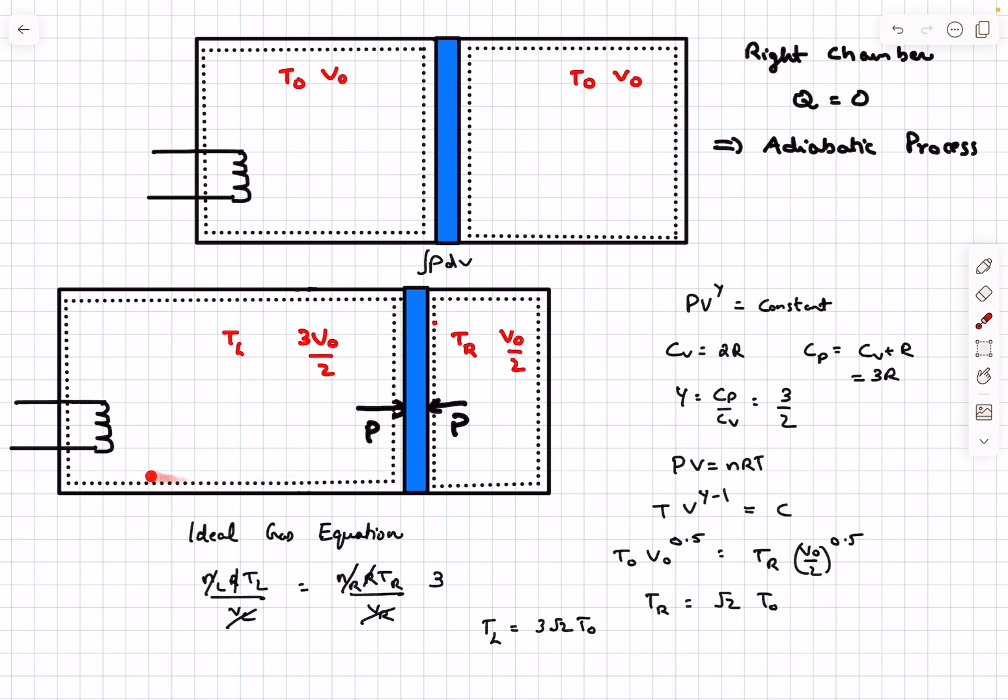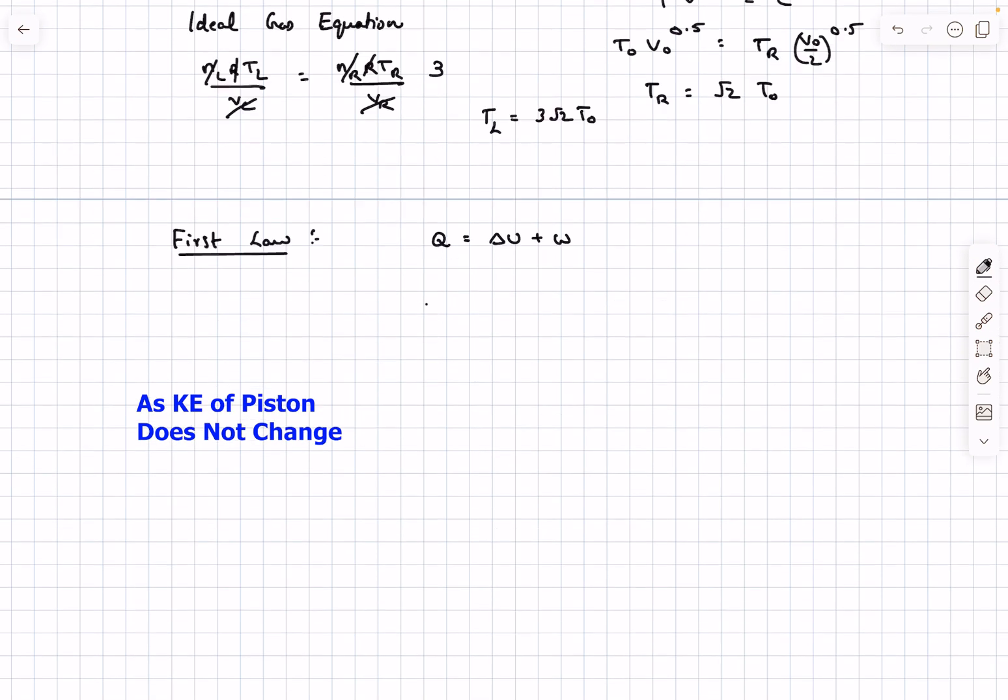So we can use first law in the right chamber. The heat transfer from the right system is zero. The change in internal energy is nCV ΔT, and W is the work interaction due to the piston. From here, Wpiston = -nCV(TR - T0) = -2R(√2 - 1)T0. The negative sign indicates work is being done on the system.